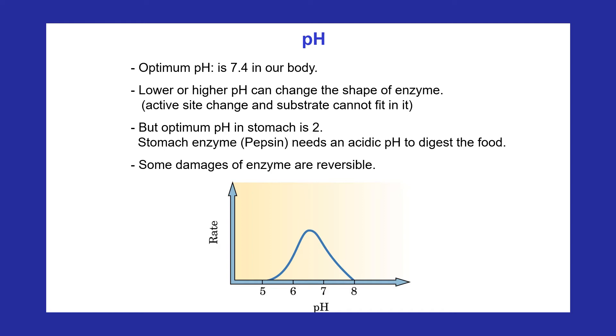If small changes in pH are corrected, an enzyme can regain its structure and activity. However, large variations from optimum pH permanently destroy the structure of the enzyme. We can see the relationship between the rate of reaction and pH in the figure.